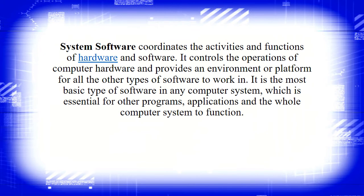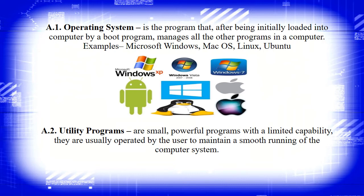System software coordinates the activities and functions of hardware and software. It controls the operations of computer hardware and provides an environment or platform for all other types of software to work in. It is the most basic type of software in any computer system, essential for other programs and applications to function. The operating system is the program that, after being initially loaded by a boot program, manages all the other programs in a computer. Examples include Microsoft Windows, Mac OS, Linux, and Ubuntu.